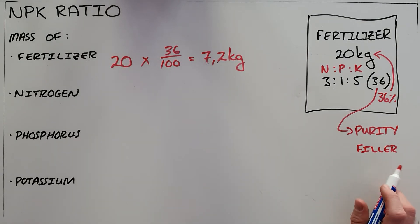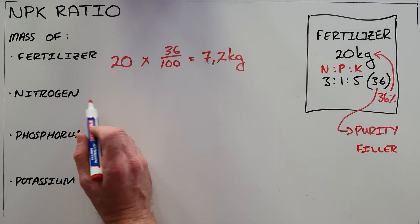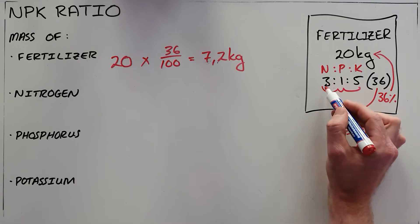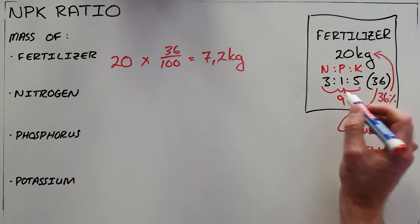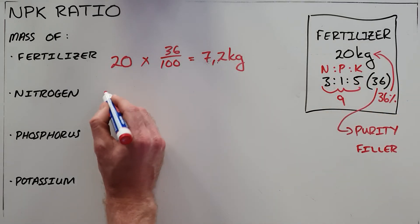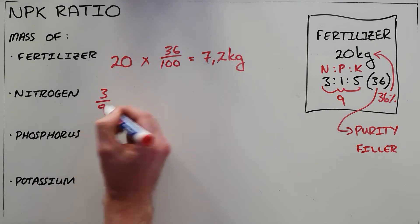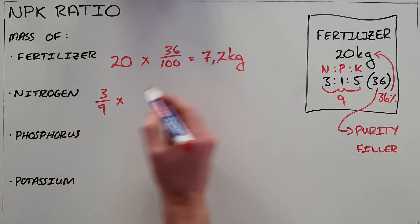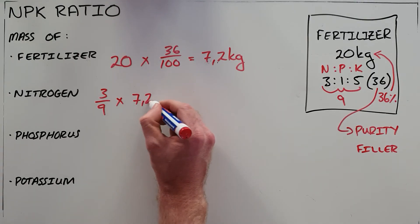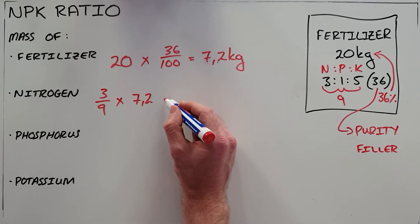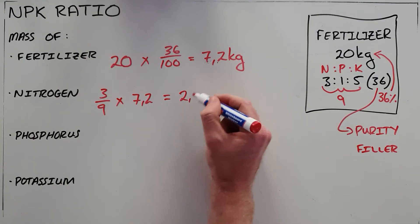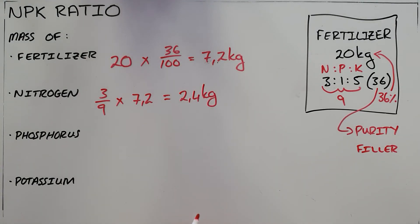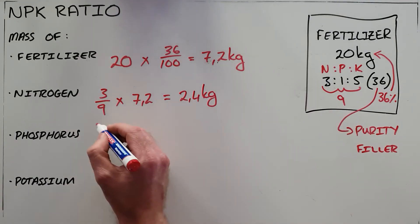You could also be asked for the mass of nitrogen. As we can see, this ratio makes up nine parts in total (three plus one plus five), and of those nine parts, nitrogen is three. So we say three over nine multiplied by the mass of fertilizer in this bag. Since fertilizer is only 7.2 kilograms, that tells us that in this bag we will find 2.4 kilograms of nitrogen.